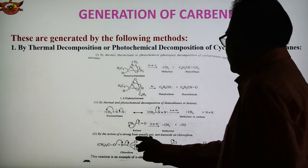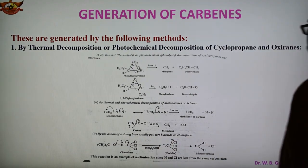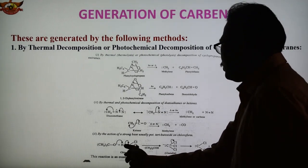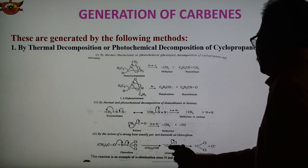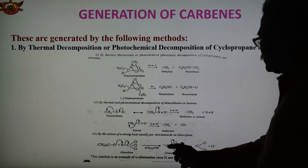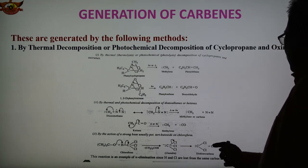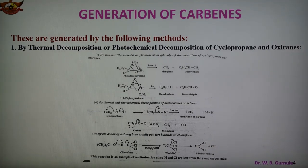The third method is the reaction of a strong base, usually potassium tert-butoxide, with chloroform (CHCl3). The base abstracts a proton, and an unstable intermediate forms in which carbon has 2 electrons and 3 Cl atoms on the same carbon. This is unstable, so one Cl leaves as chloride ion, giving dichlorocarbene, CCl2. From chloroform we first obtain the unstable intermediate and then dichlorocarbene. These are the 3 methods of generation of carbene.